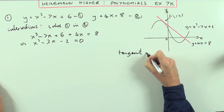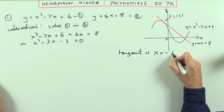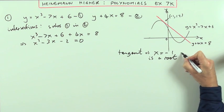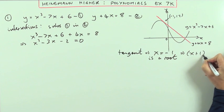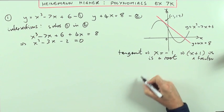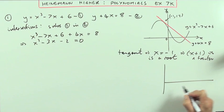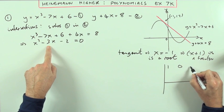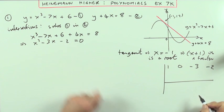There's a tangent, which means x = -1 is a root. Or you could jump in straight in and say, which means x + 1 is a factor. And then use your synthetic division here. So I've got 1, but no x², -3 for the x, -2. And I know that -1 works.